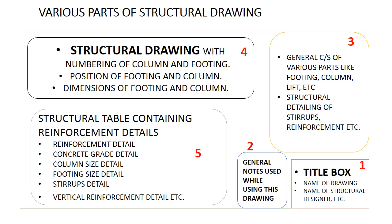After reading general notes, take your eyes to the general cross sections given above the title box and watch it carefully. In the general cross section you can find details of the height of structure and other relevant data of structure. Details of stirrups are also given in this area. General cross section is used all the way while implementing the data on site.